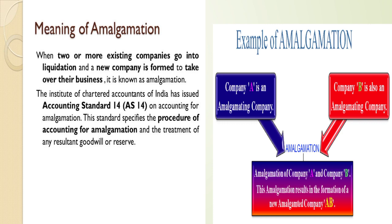AS14 specifies the procedure of accounting for amalgamation and the treatment of any resultant goodwill or reserves. For example, company A and company B are both amalgamating companies. When both companies go into liquidation, a new company — A and B combined — is formed.